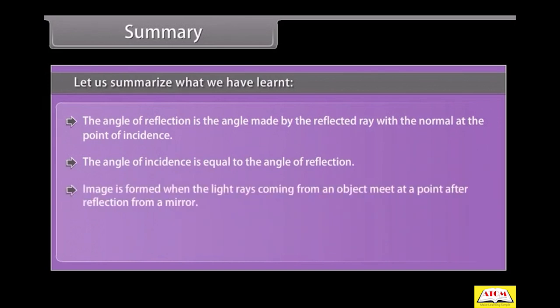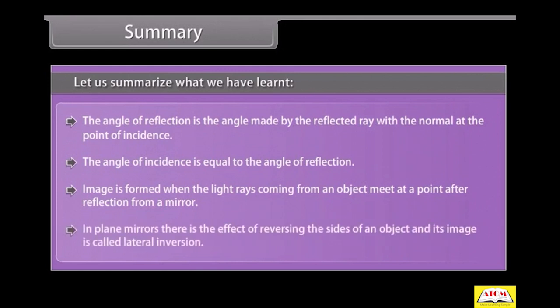Image is formed when the light rays coming from an object meet at a point after reflection from a mirror. In plane mirrors, there is the effect of reversing the sides of an object and its image is called lateral inversion.